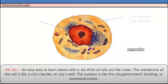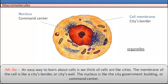An easy way to learn about cells is we think of cells like cities. The membrane of the cell is like the city border or city's wall. The nucleus is like the city government building or the command center.